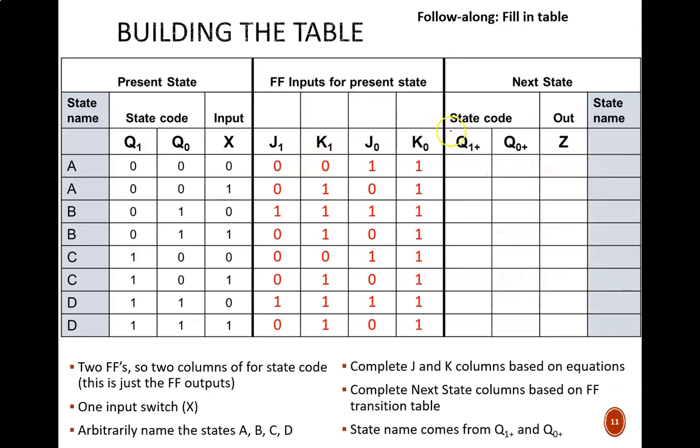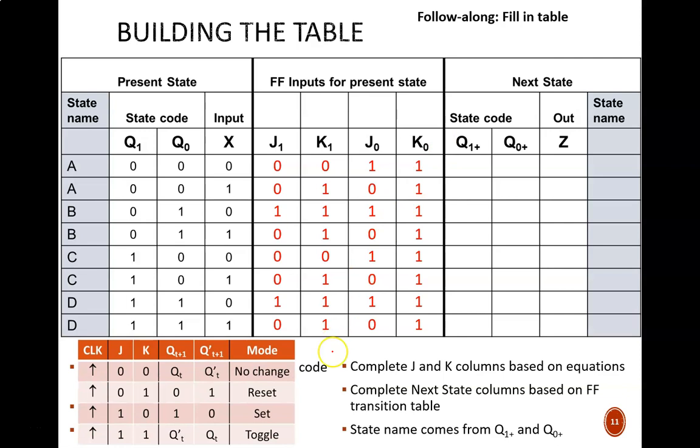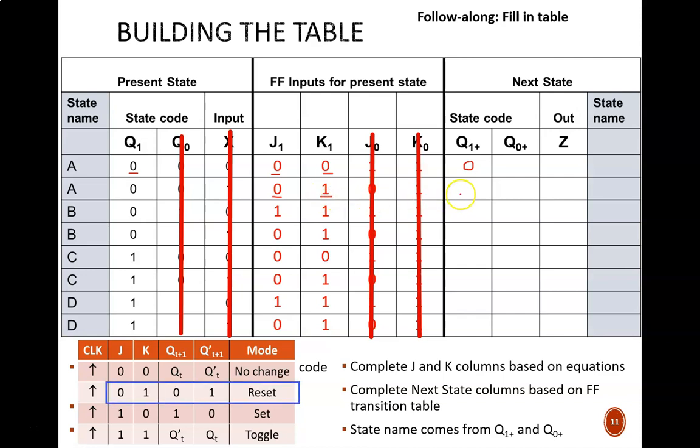Now for the next state section. These Q plus values are a little trickier to fill out. To do so, we need to reference the characteristic table for JK flip-flops. Q1 plus means the Q1 output at the following clock pulse. This is determined by the current Q1 value and the J1 and K1 instructions. So I'll start by ignoring these other columns. Now we go row by row. This top row says that J1 equals 0 and K1 equals 0. This is no change mode. Since Q1 starts at 0, it remains at 0. The next row says that J1 equals 0 and K1 equals 1. This is reset mode. So Q1 will become 0. It doesn't even matter what the starting Q1 value was in this case.